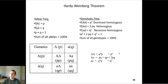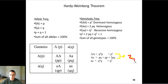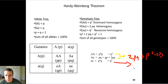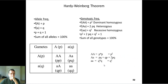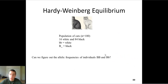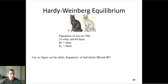Using this, we can work backwards to determine the unknowns in a population. P-squared plus 2PQ will always look dominant, since both are the dominant phenotype — you can't easily differentiate between them. Q-squared stands for the recessive look, since there's only one way to look recessive. For example, in a population of 100 cats where 16 cats are white and 84 cats are black, and black is dominant, the dominant phenotype is 84 out of 100, which is 0.84.